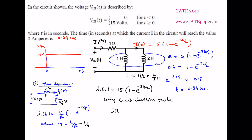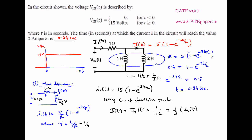We can write I(T) equal to I1(T) multiplied by 1 divided by 1 plus 2, which is simply 1 by 3 times I1(T). Since I1(T) is 15, then 1 by 3 into 15 is 5. So I(T) equals 5 into 1 minus e to the power minus 3T by 2, which is the required current equation. This is the time domain approach to calculate I(T).